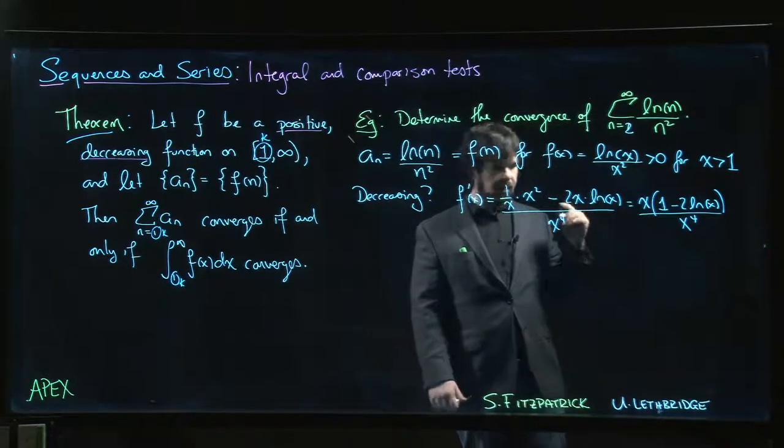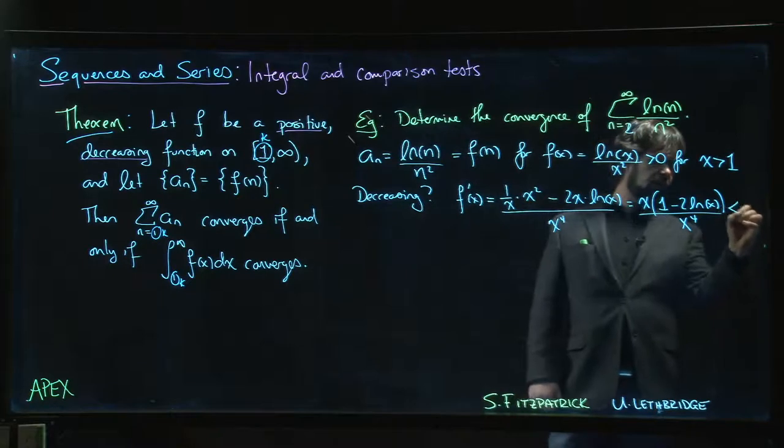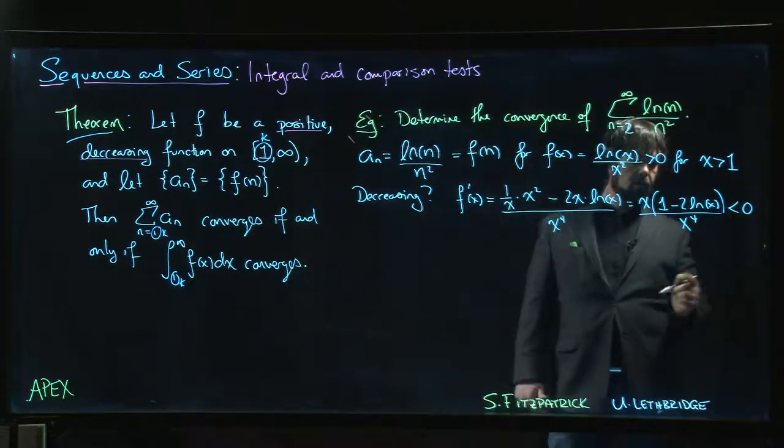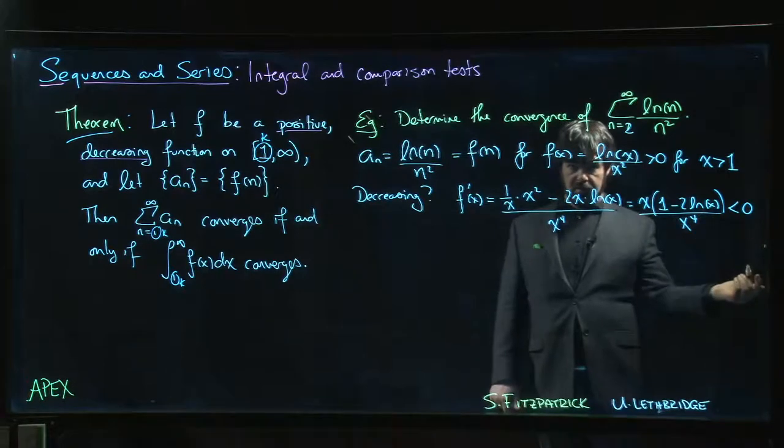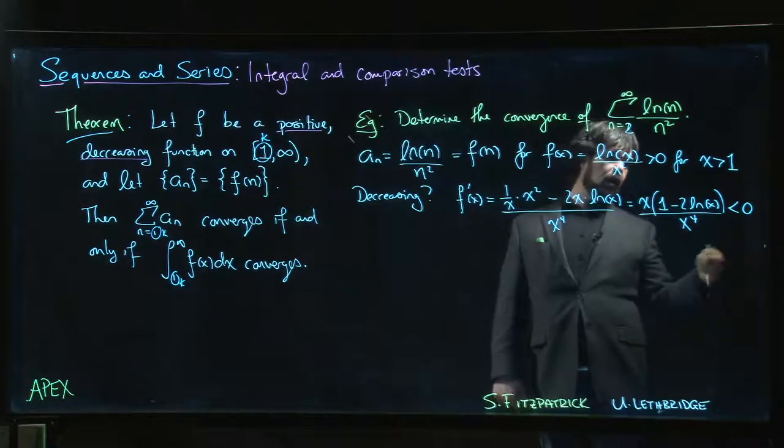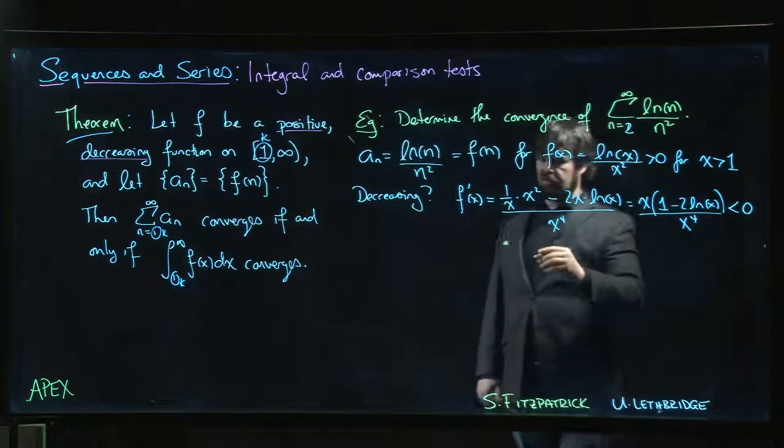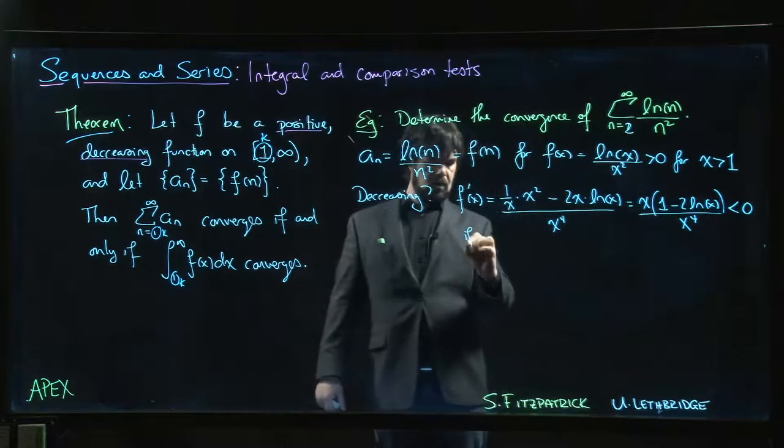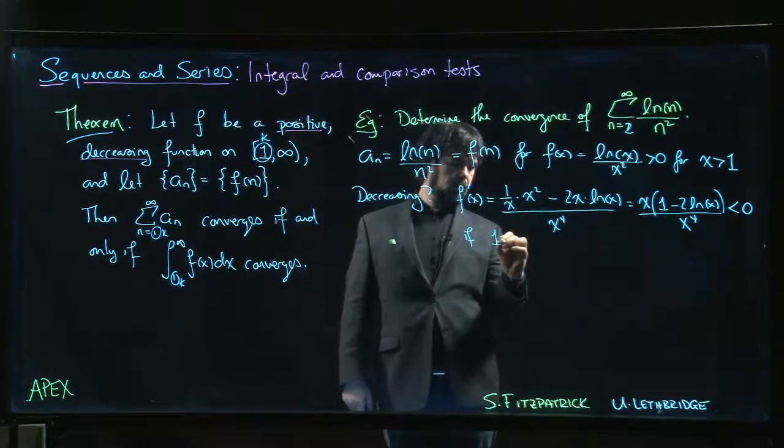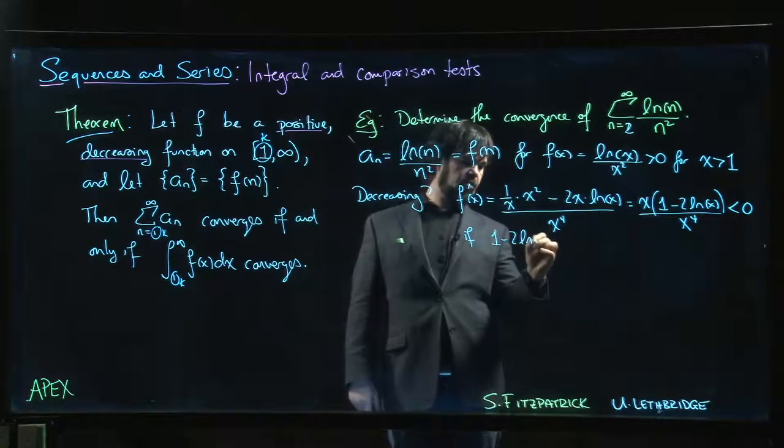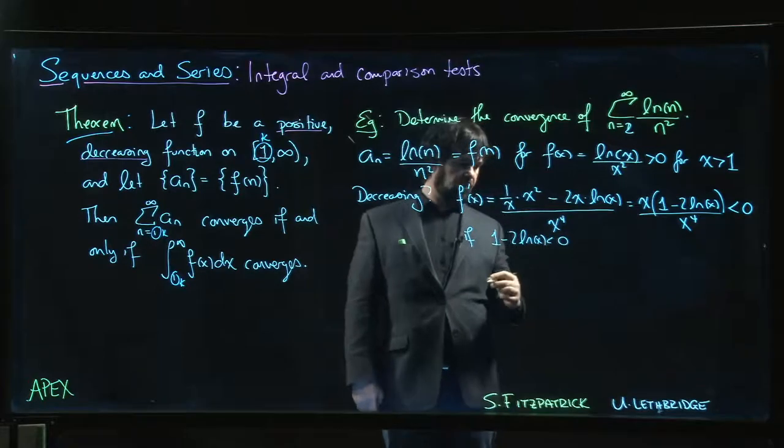Okay. We need this to be negative. When is this going to be negative? It's going to be less than 0. Well, x can't be less than 0. Negative numbers aren't in the domain. So it's going to be less than 0 if 1 minus 2 log x is less than 0.